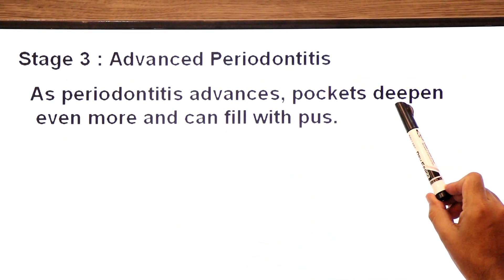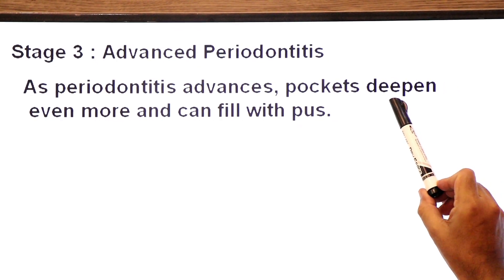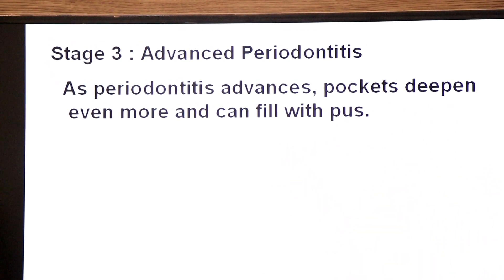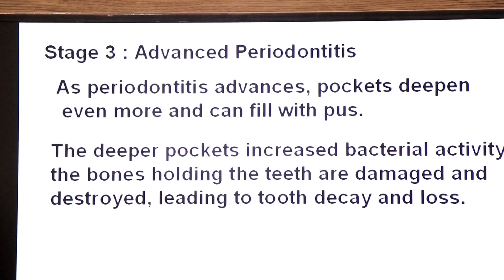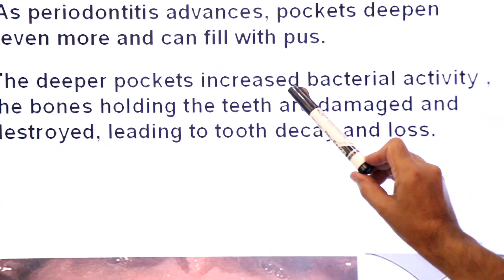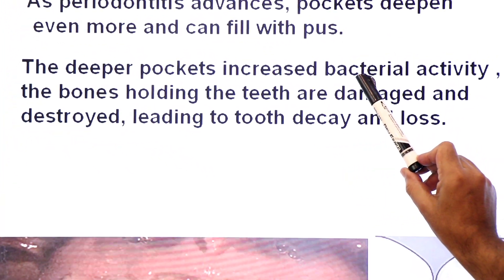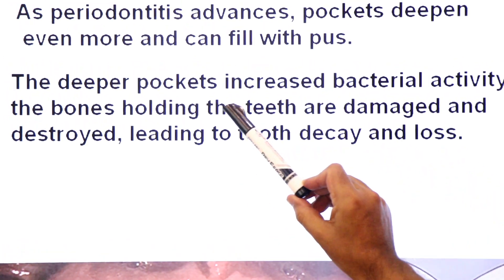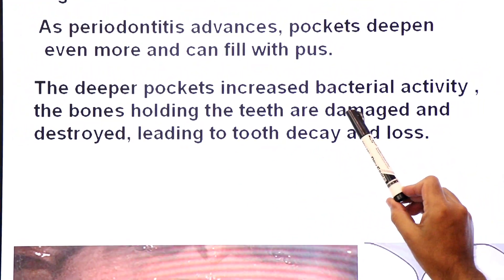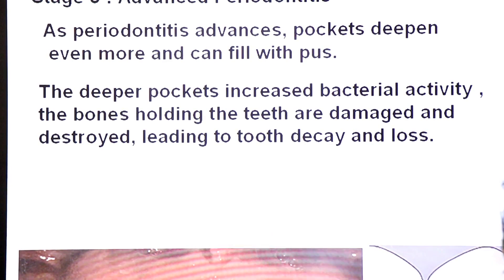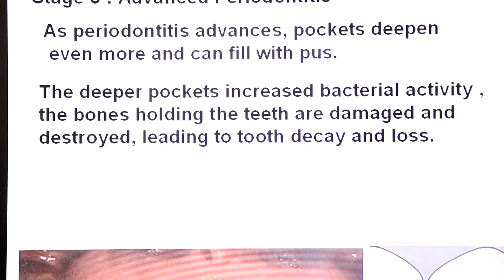In advanced periodontitis, the pockets deepen further and can fill with pus. The deeper pockets increase bacterial infection and the alveolar bones holding the teeth are damaged and destroyed, leading to tooth decay and tooth loss.